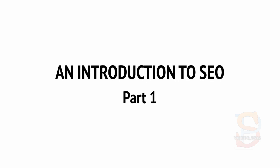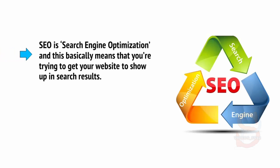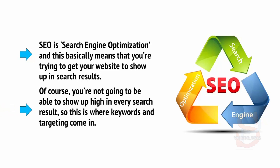Now it's time to look at one of the biggest pillars of internet marketing of all: SEO. SEO is search engine optimization, and this basically means that you're trying to get your website to show up in the search results. Of course, you're not going to be able to show up high in every search result, so this is where keywords and targeting come in.